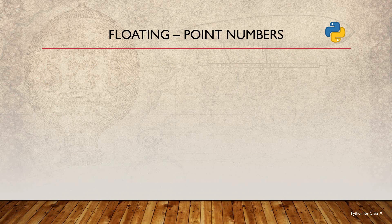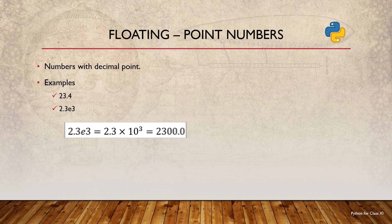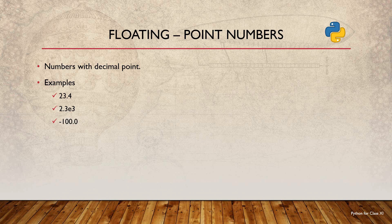Next, I am considering floating point numbers. Floating point numbers are numbers with a decimal point in them. Example floating point literals are 23.4, and 2.3e3, where 2.3e3 represents a floating point number using scientific notation — it is equivalent to 2.3 × 10³, which equals 2300. Negative 100.0 can also be considered a floating point number. Floating point numbers can also be either positive or negative.